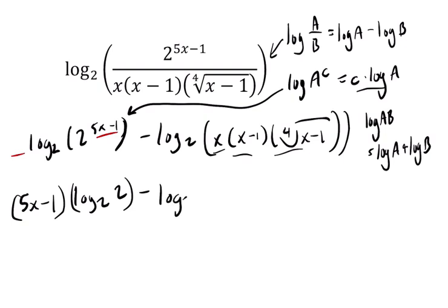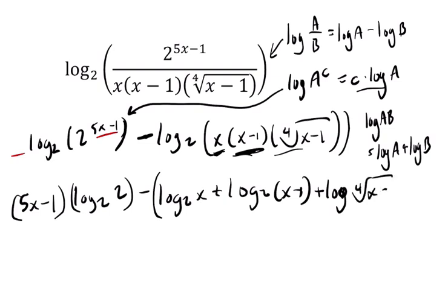In our case, it just means log base 2 of the first thing x plus the log base 2 of the second thing x minus 1, put this all in parentheses because this minus sign applies to each piece of it, plus the log of the fourth root of x minus 1.